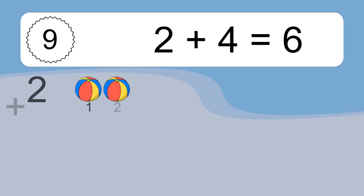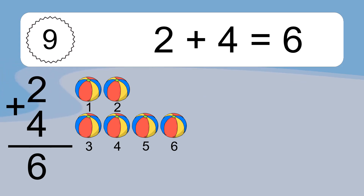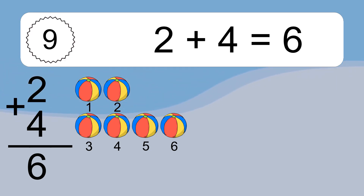2 plus 4 equals what? 2 plus 4 equals 6. Let's count it: 1, 2, 3, 4, 5, 6.